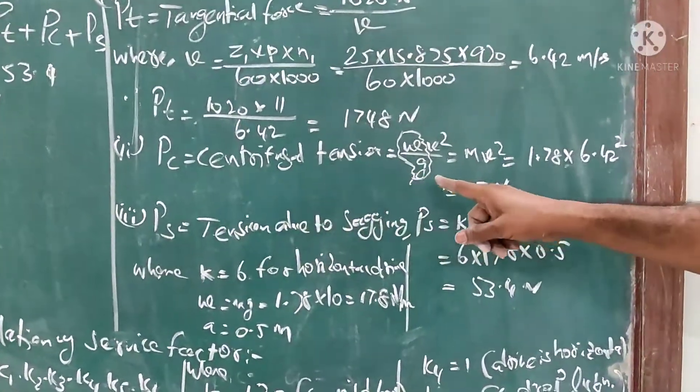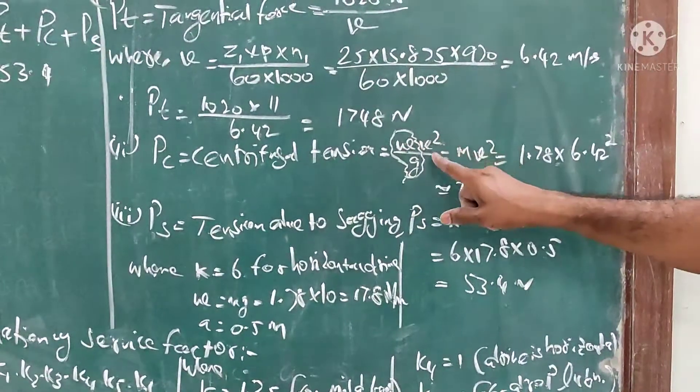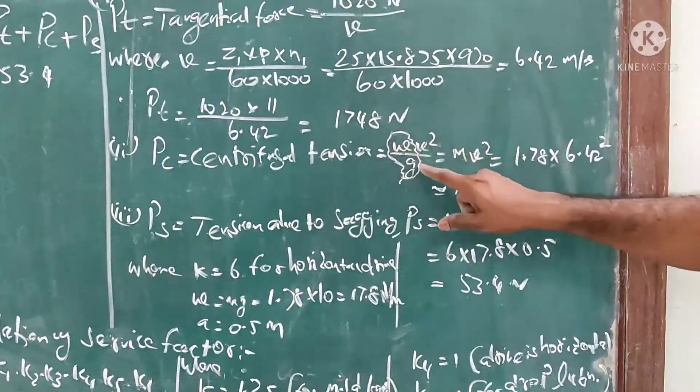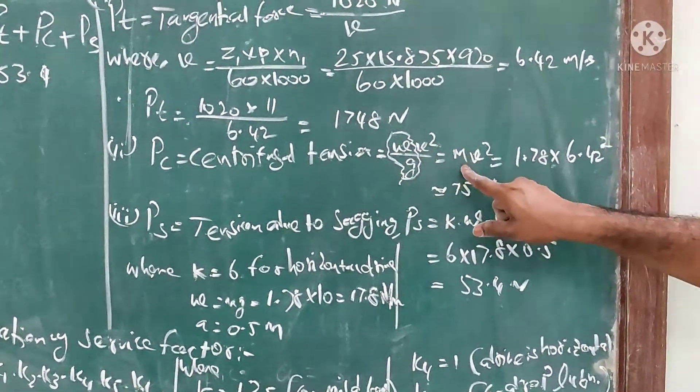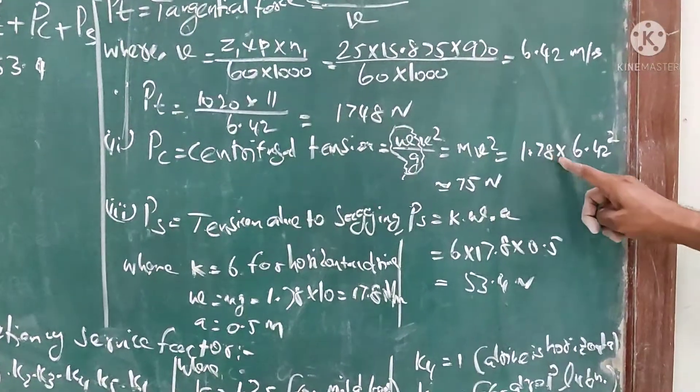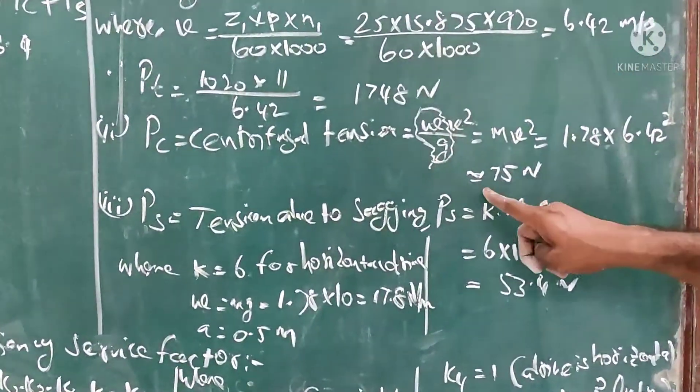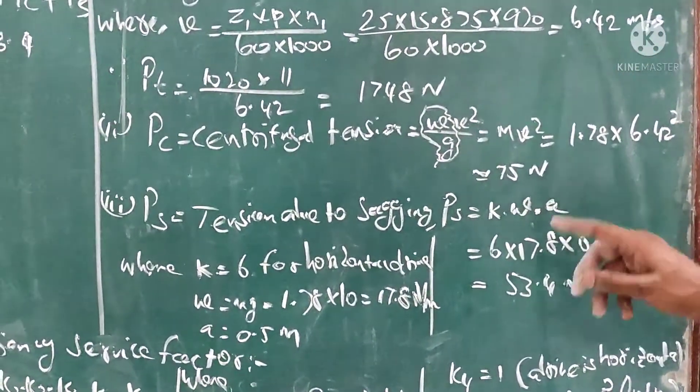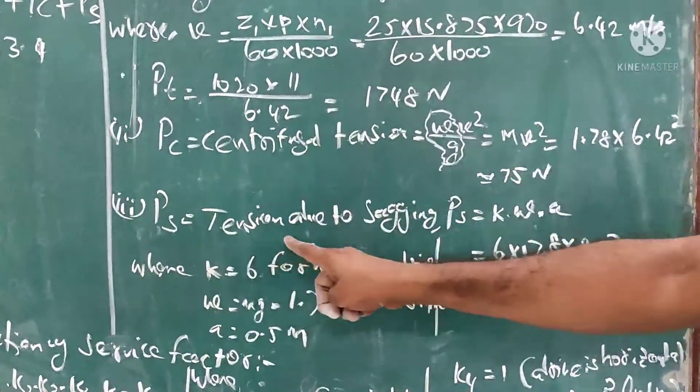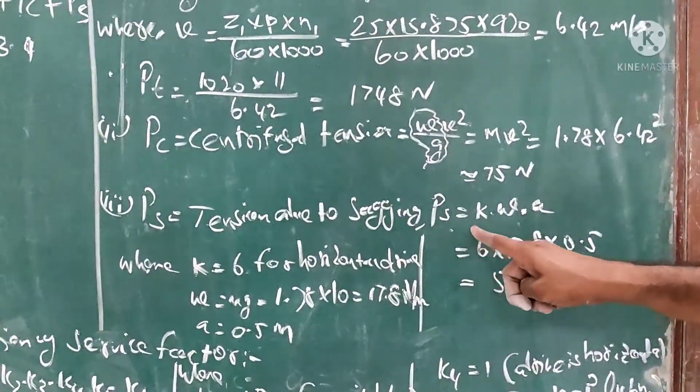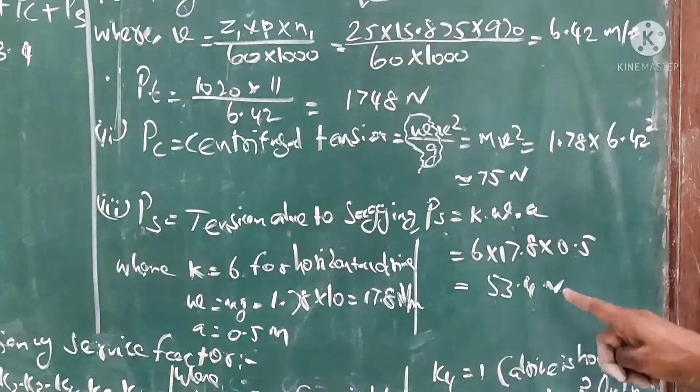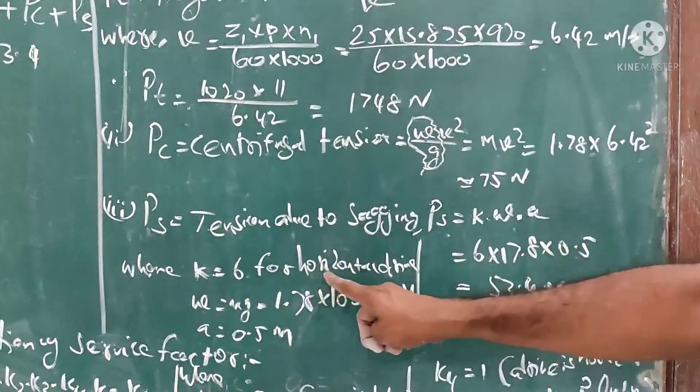Centrifugal tension formula is τU V²/G, where τU/G we replace by M × V² = 1.78 × 6.42² = 75 Newton.